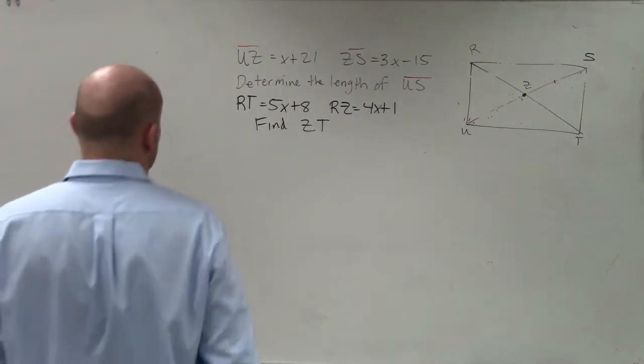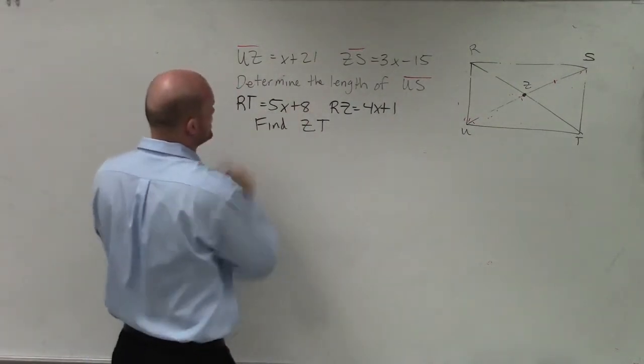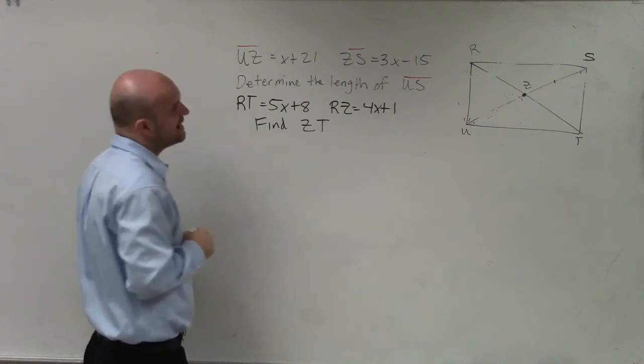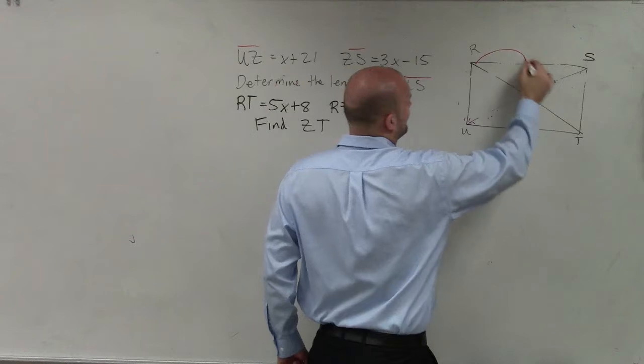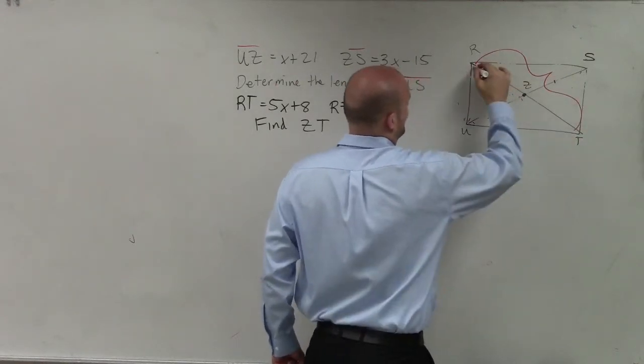So on this one, ladies and gentlemen, it says now the length of RT is 5x plus 8, and RZ is 4x plus 1. So we have this whole length, and we have this whole length.